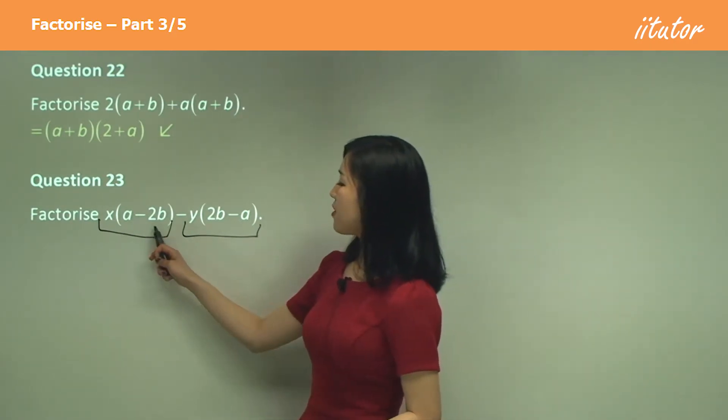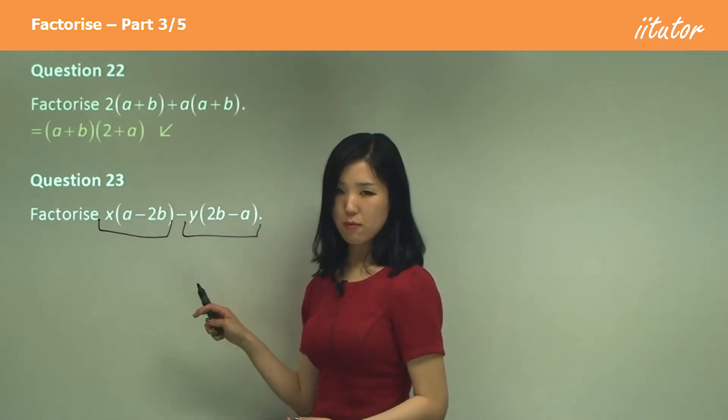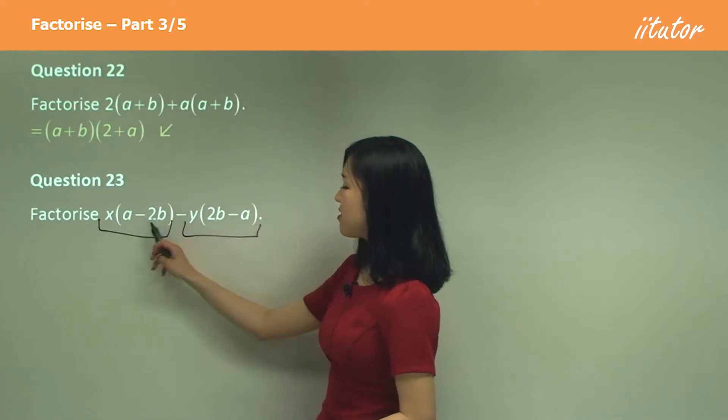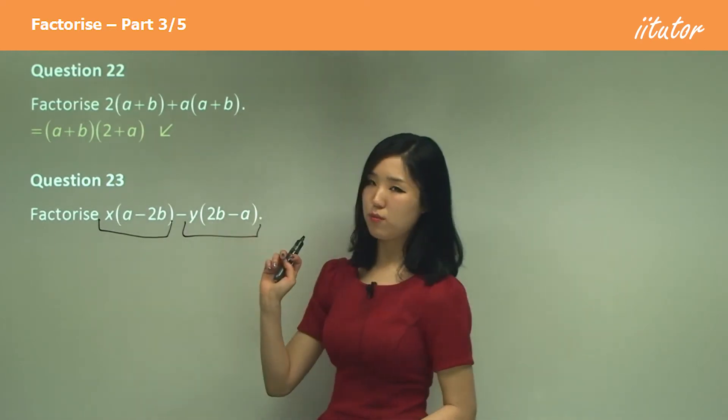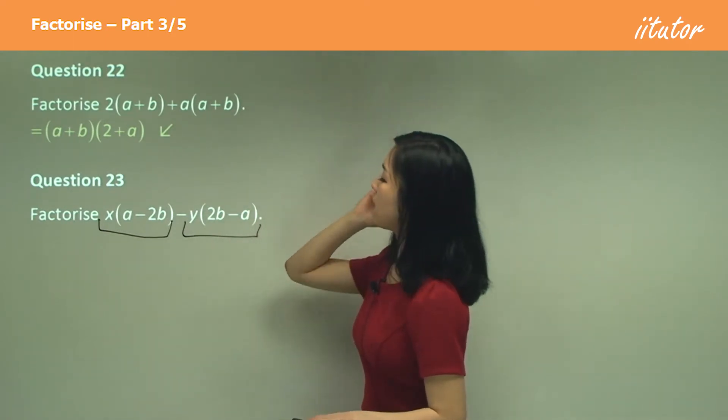Well we have a minus 2b but here we have 2b minus a. They look almost the same but they're not the same because of the signs. This is positive a and this is negative a. This is negative 2b but this is positive 2b. So they're the same but opposite signs. So how can I work with this?